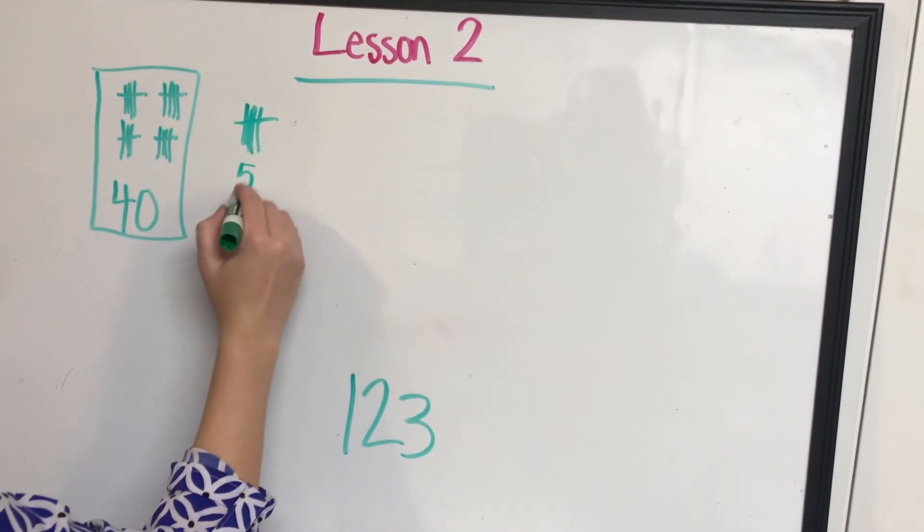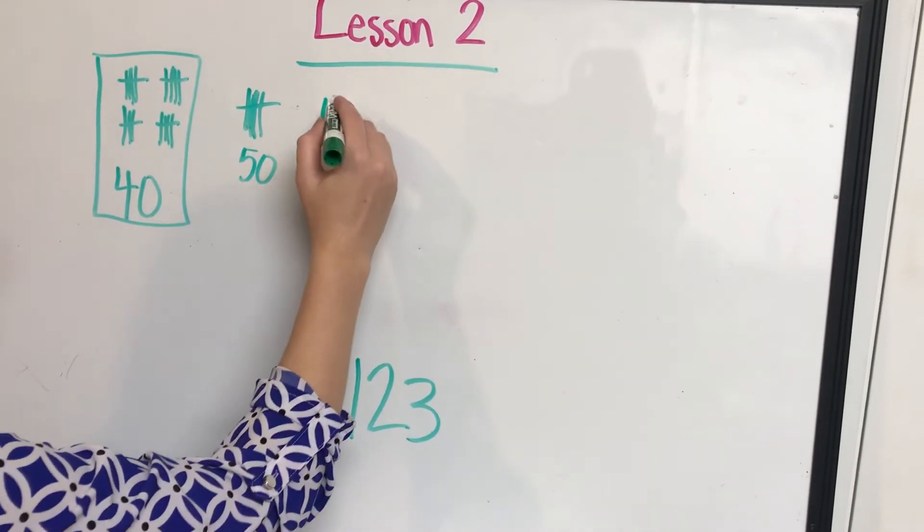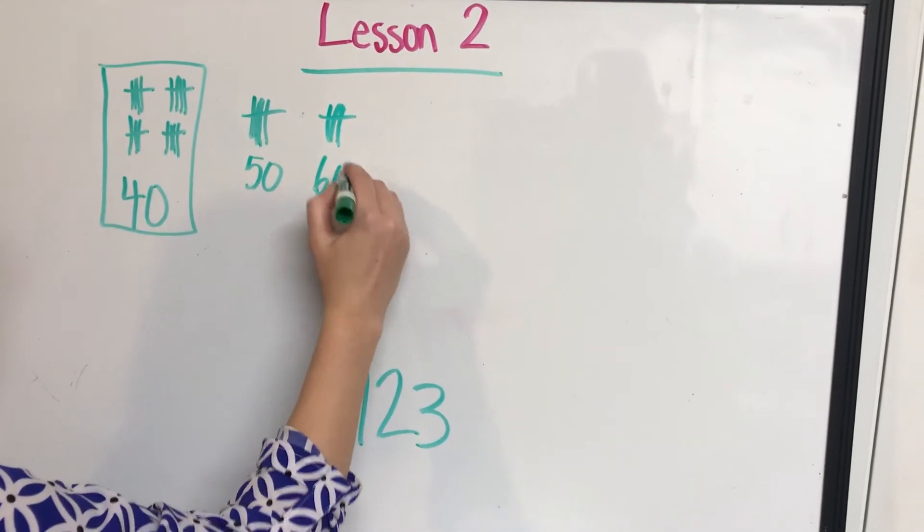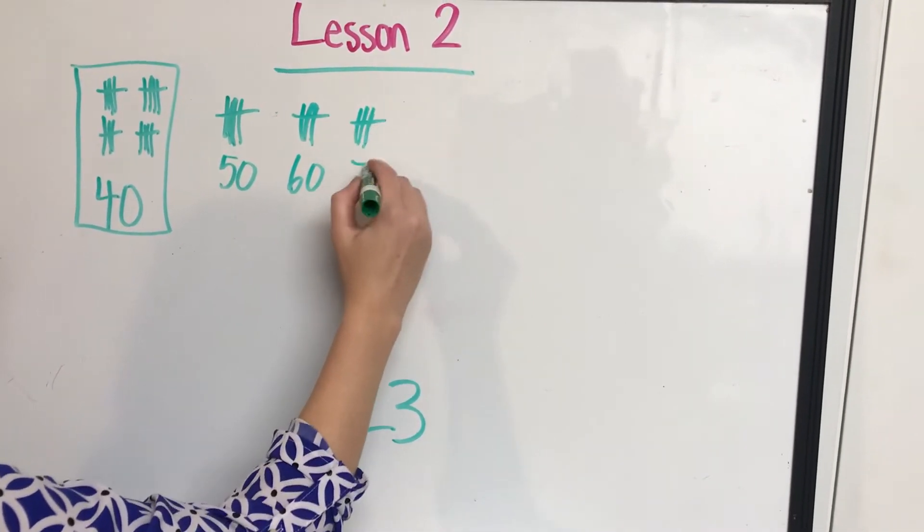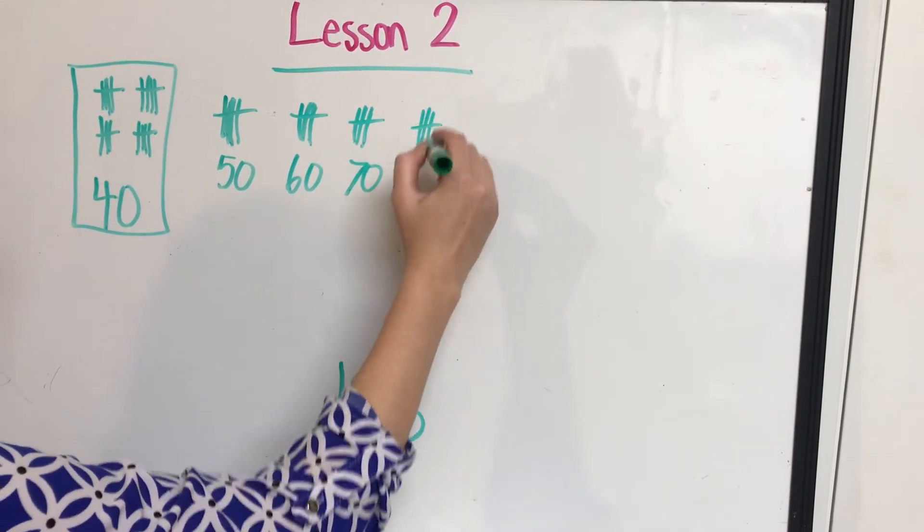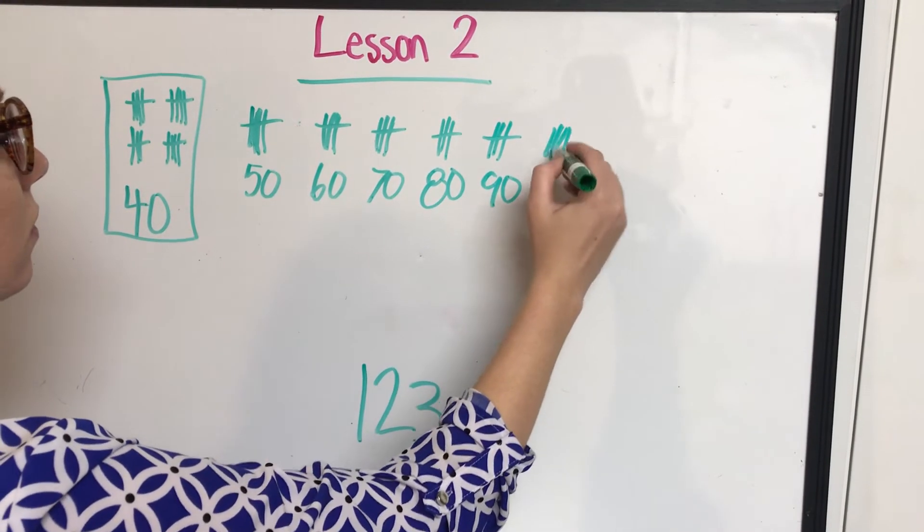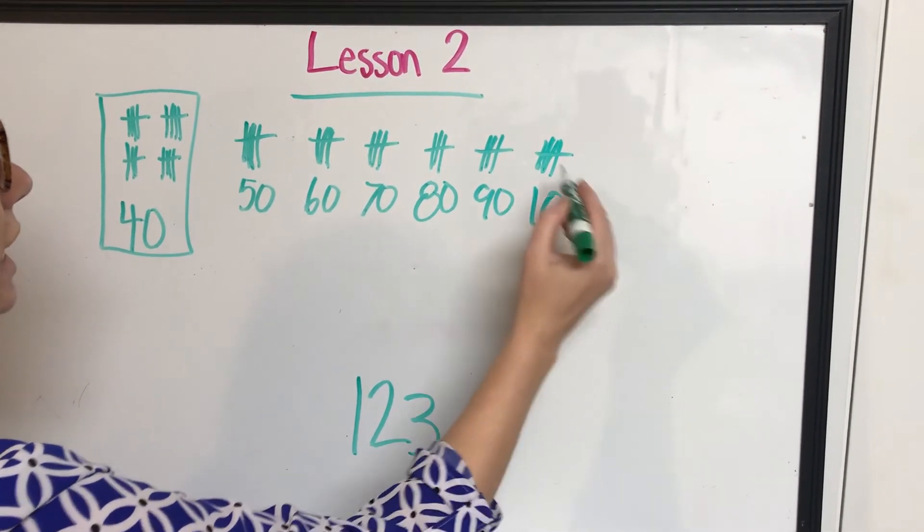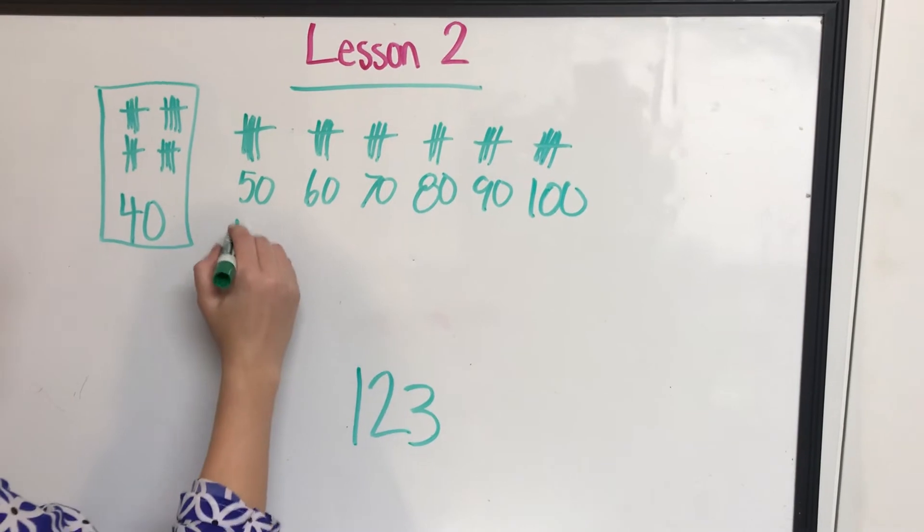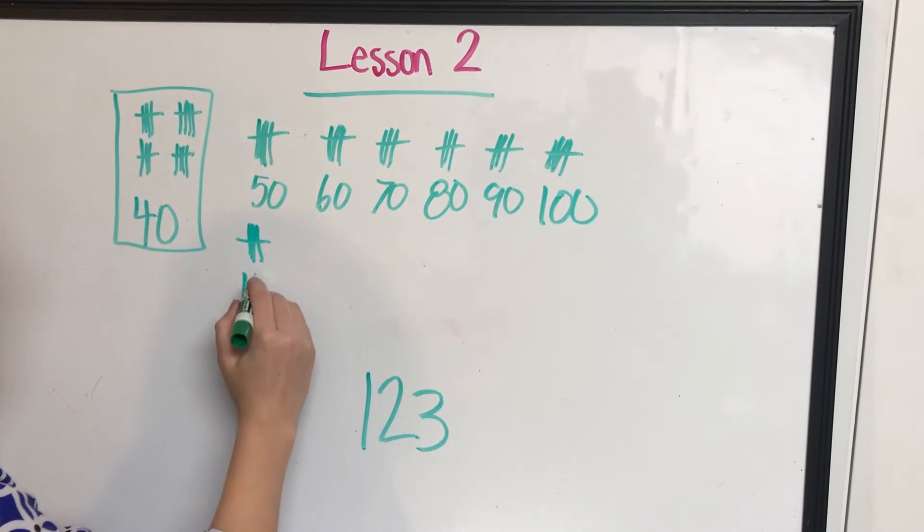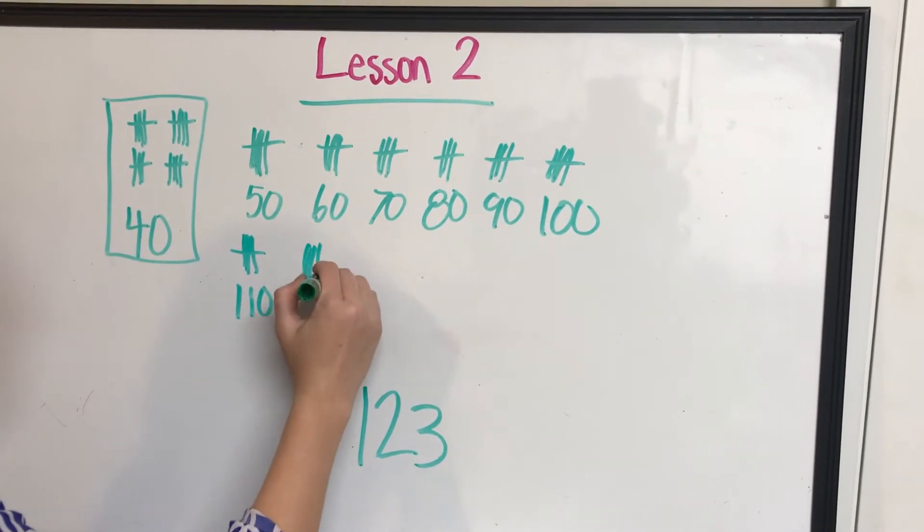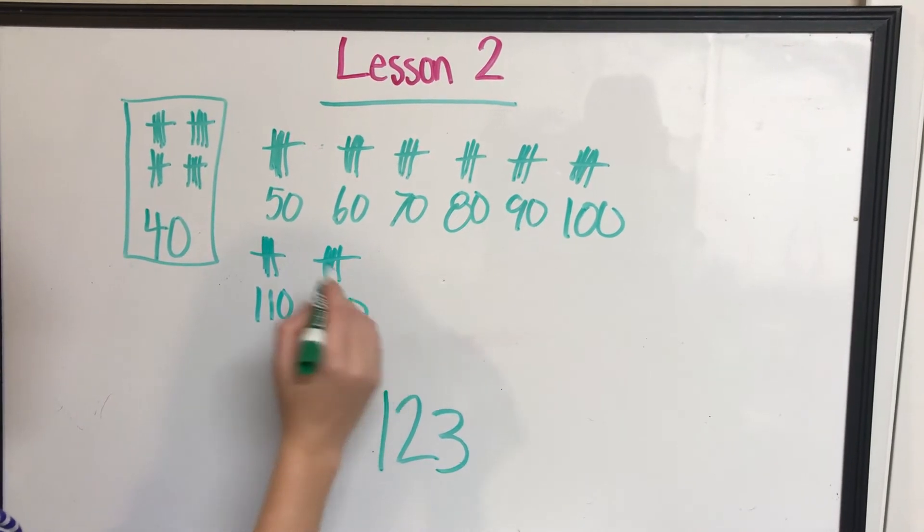So I'm going to draw my tens block and I'm going to label it. Well, 40 plus 10 would be 50. Now I'm going to just keep going. This one would be 60. This one would be 70. 80. 90. 100. I need to keep going. I'm trying to go to 123. This one would be 110. This one's 120.